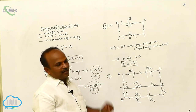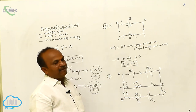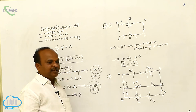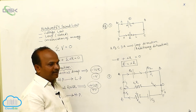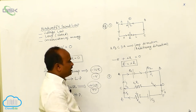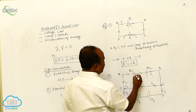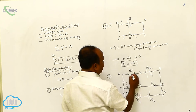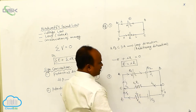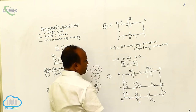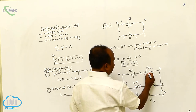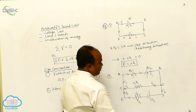After doing the current distribution, we identify which point is the higher potential point and which is the lower potential point. The negative terminal is taken as the lower potential point, and the positive terminal is taken as the higher potential point.